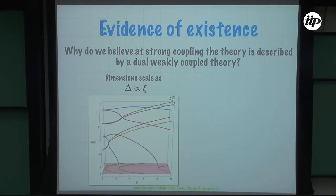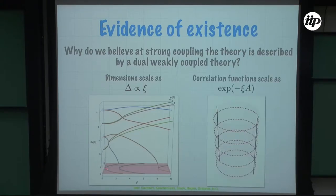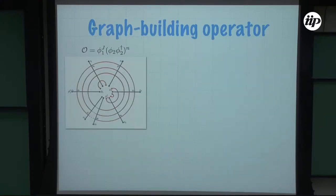If you make ξ slightly complex, the states don't collide. What happens is you can see that a state starts, collides with its mirror state, and then they split in the complex plane. Another observation is that the four-point function, which can also be computed, also behaves at strong coupling in accordance with expectations of some classical description — it also looks like a tunneling process.